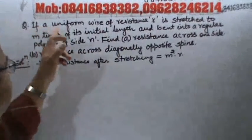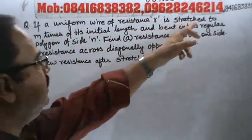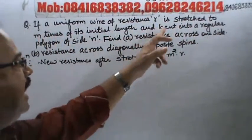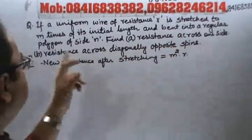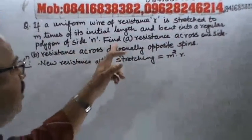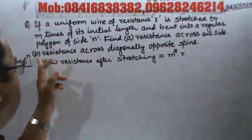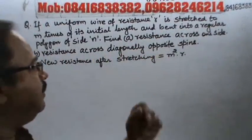If a uniform wire of resistance R is stretched to m times of its initial length and bent into a regular polygon of side n, find (a) resistance across one side and (b) resistance across diagonally opposite spins.